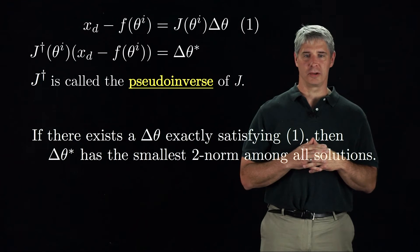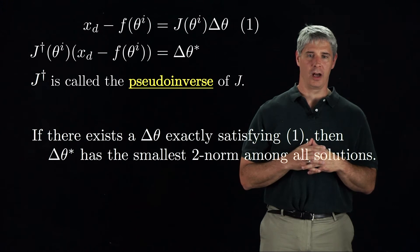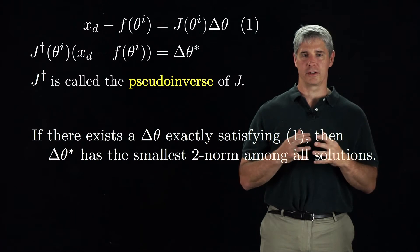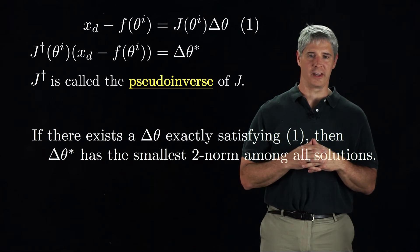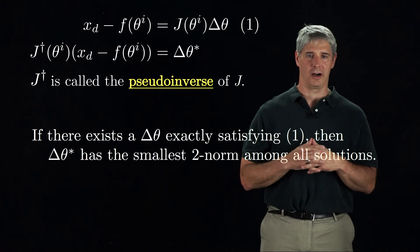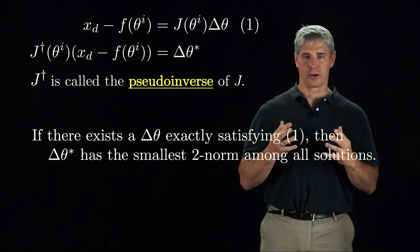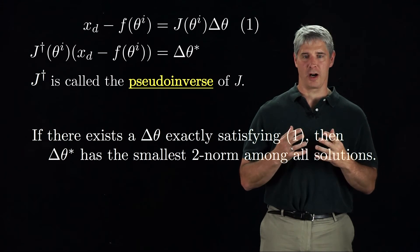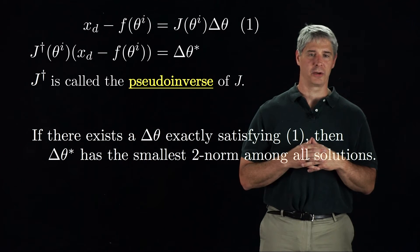If there exists more than one solution exactly satisfying equation 1, for instance if the robot is redundant, then the pseudo-inverse finds the solution vector theta-star that has the smallest length amongst all solutions. In other words, the change in joint values is as small as possible while still satisfying equation 1.